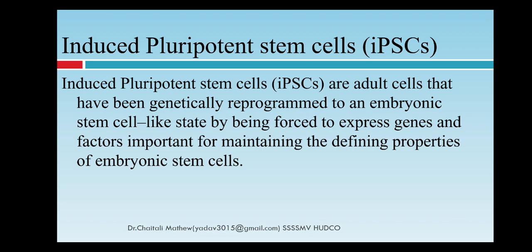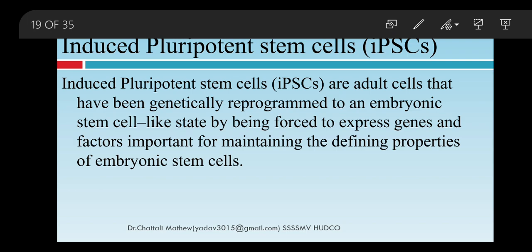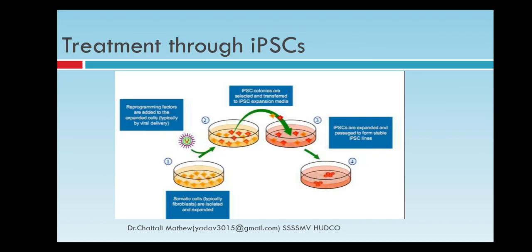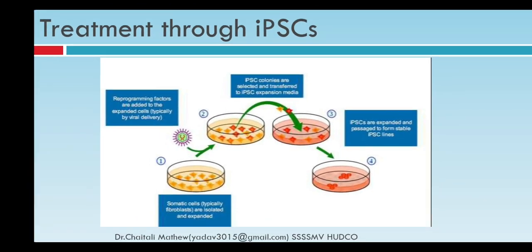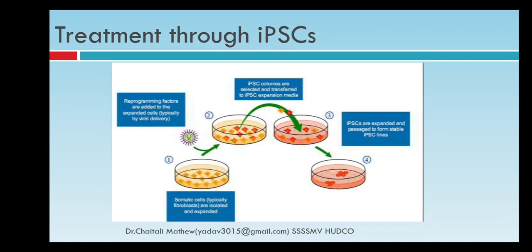Induced pluripotent stem cells are adult cells that have been genetically reprogrammed to an embryonic stem cell-like state by being forced to express the genes and factors for maintaining the defined properties of embryonic stem cells. In treatment through iPSCs, somatic cells — typically fibroblasts — are isolated, reprogramming factors are added, colonies are selected with the help of molecular markers, and these are expanded and established into stable cell lines.